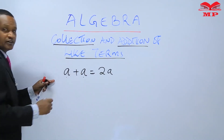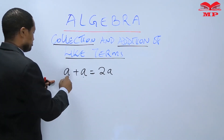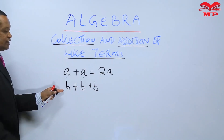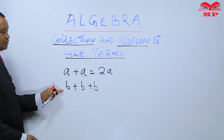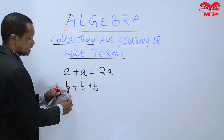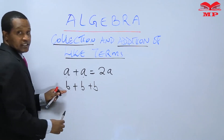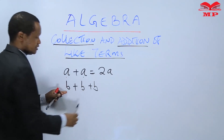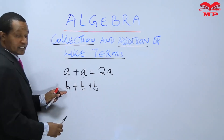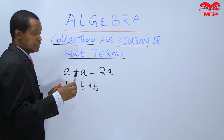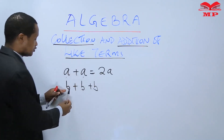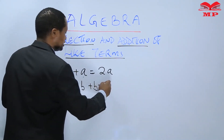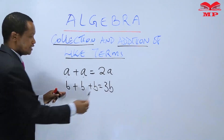Then you can have a term like B plus B plus B. These are three B's — they are like terms, they are similar terms. So if you add B plus B plus B, you will get 3B.